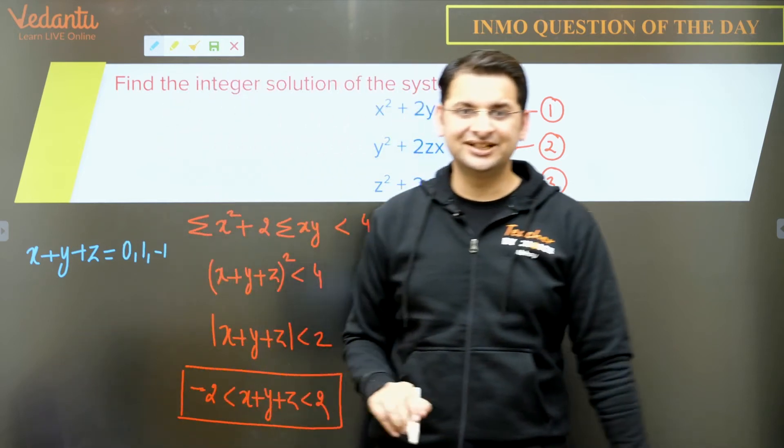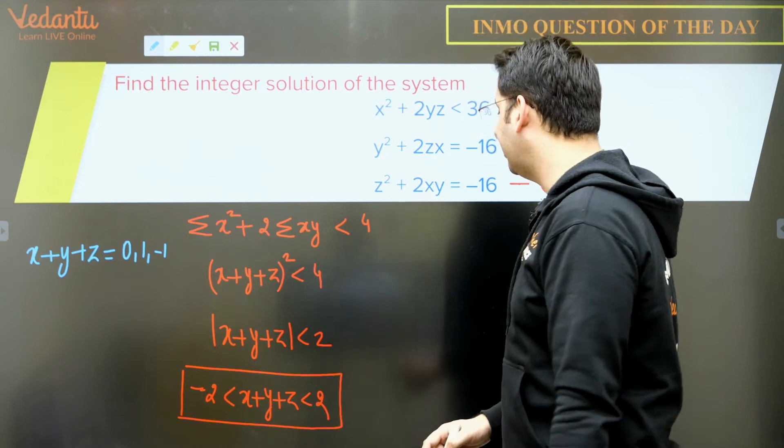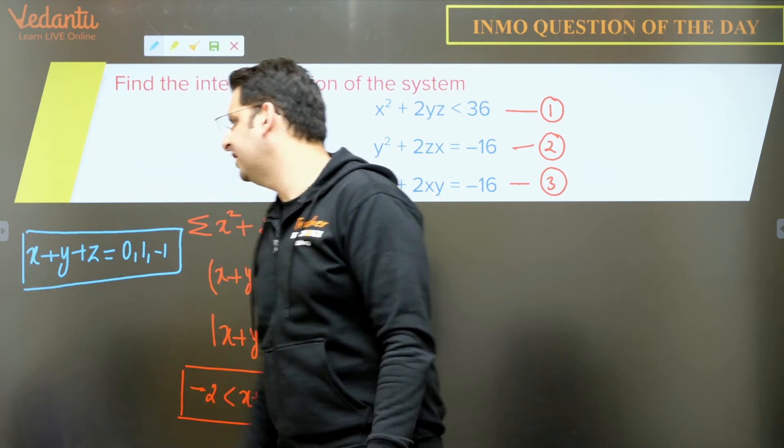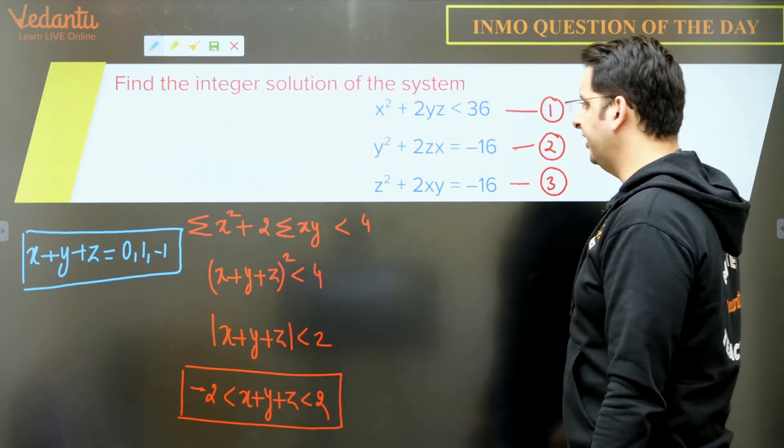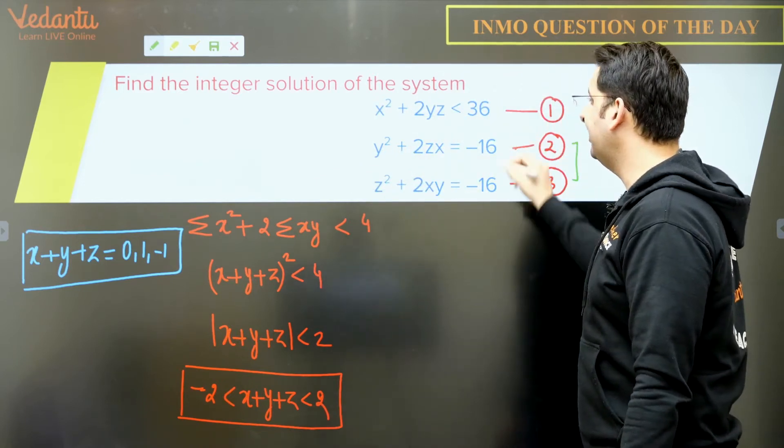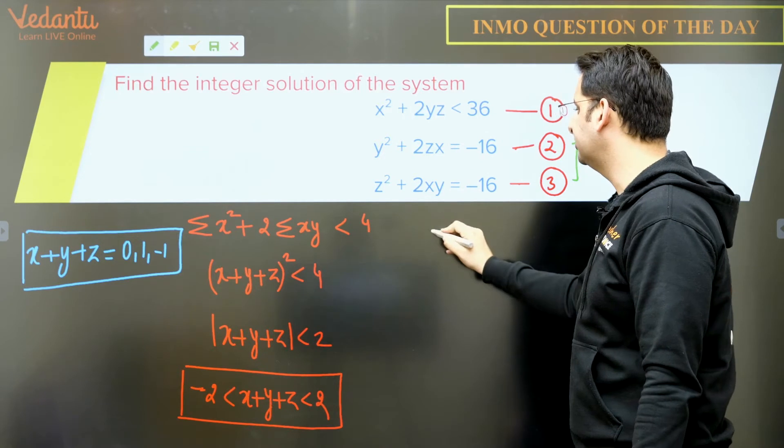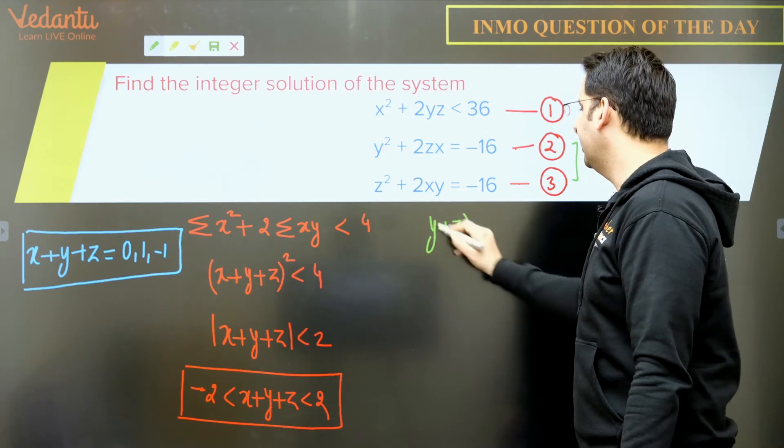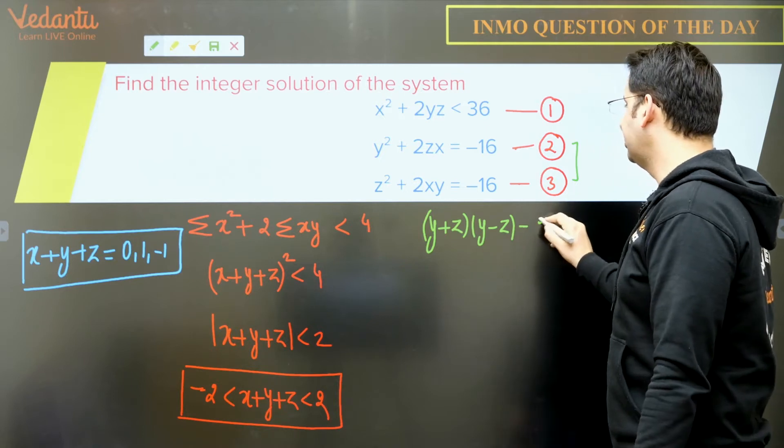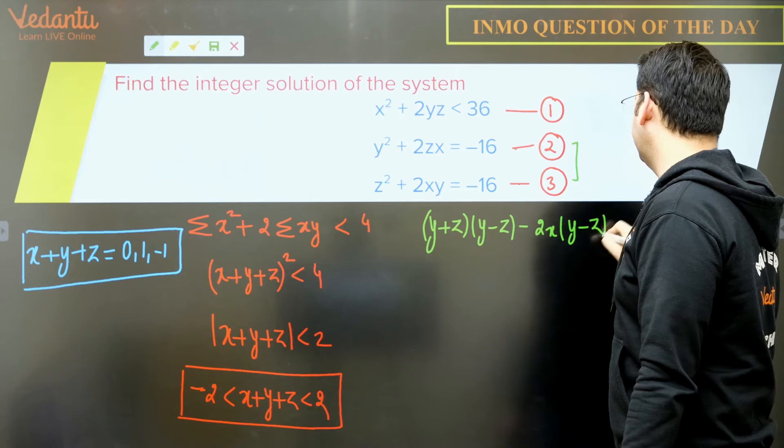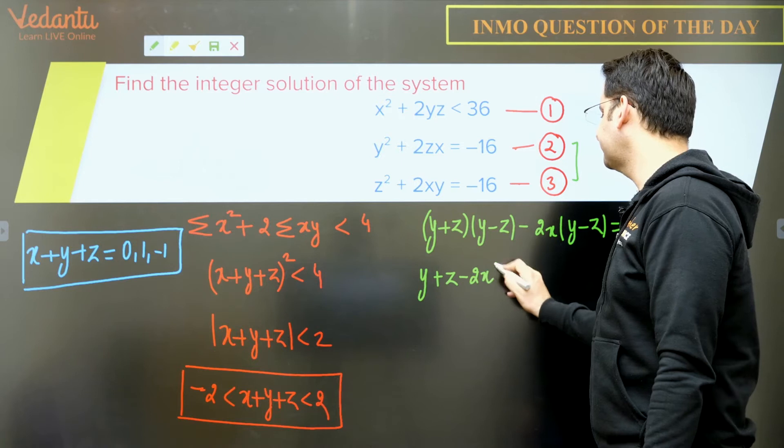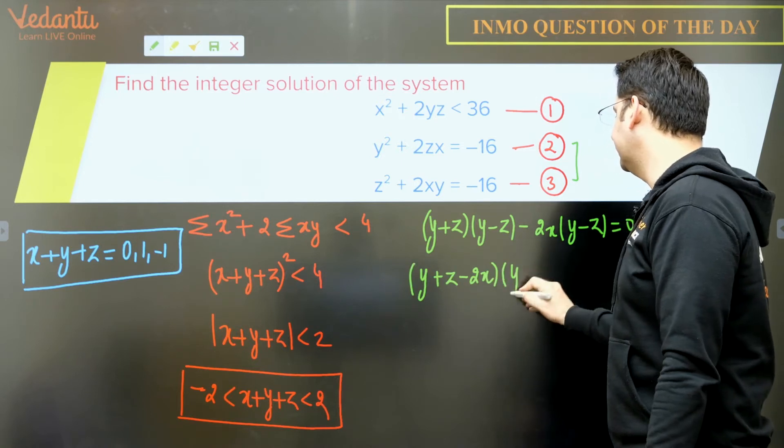So these are the three possibilities. So x + y + z can either be 0 or 1 or -1. So these are the only three possibilities. Now, what do we have here? Also, the good part is in 2 and 3 on the right hand side, we have -16. So as we subtract these two equations, (y + z)(y - z) - 2x(y - z) = 0. So we have (y + z - 2x)(y - z) = 0.